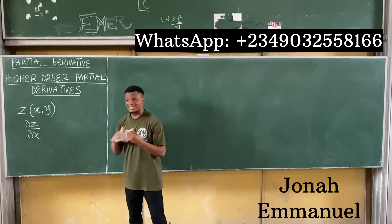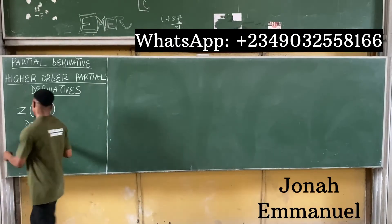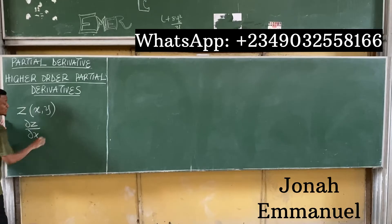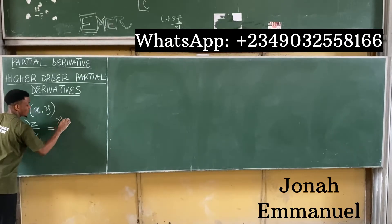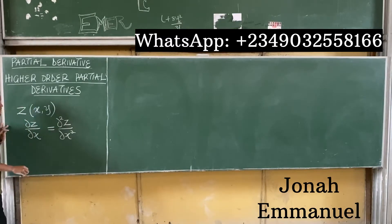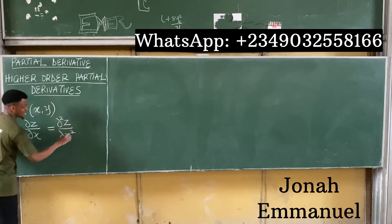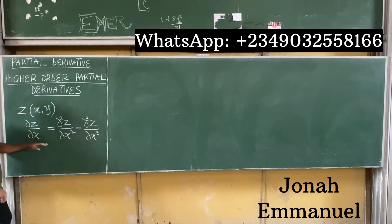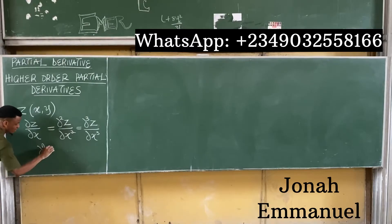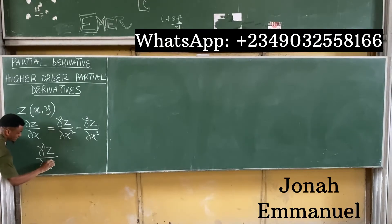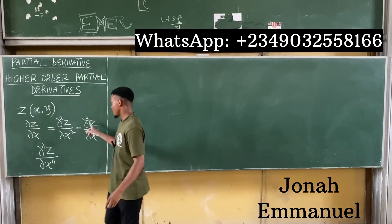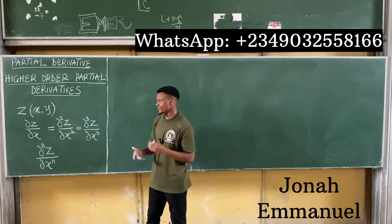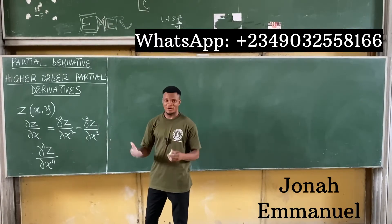Now, the concept is we can still get other higher derivatives. From the first derivative, we could differentiate z with respect to x again to get partial squared z all over partial x squared. If we differentiate again with respect to x, it becomes partial cubed z all over partial x cubed. For higher order partial derivatives, the general form is partial to the power n of z all over partial x to the power n. If you see 3 here, it means find the third partial derivative of z with respect to x or with respect to y.